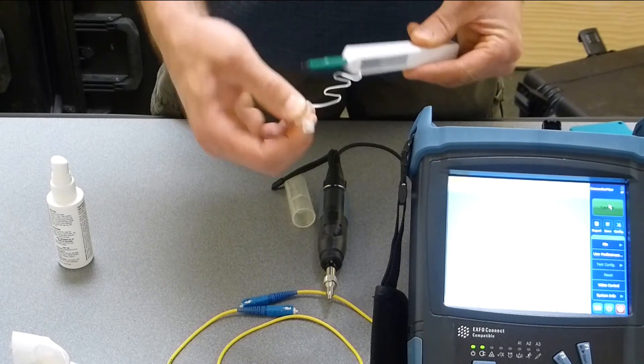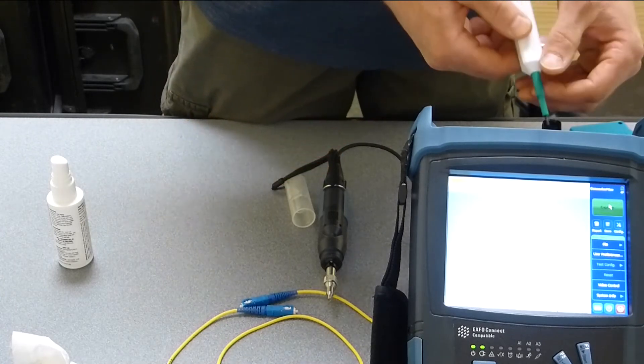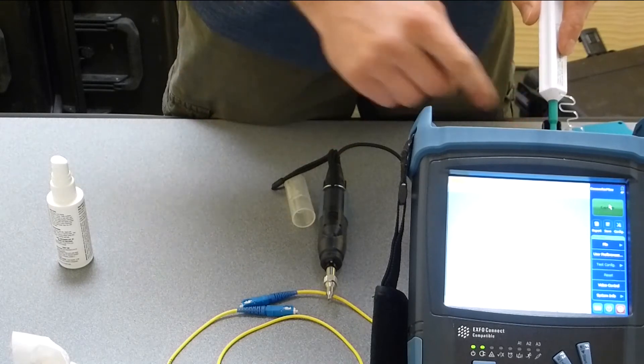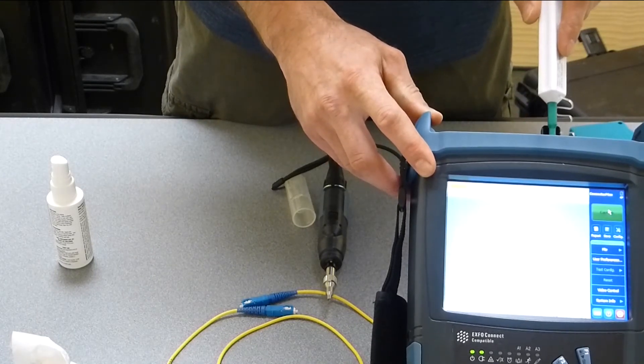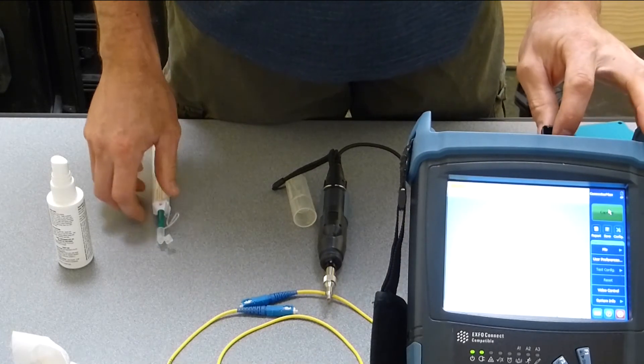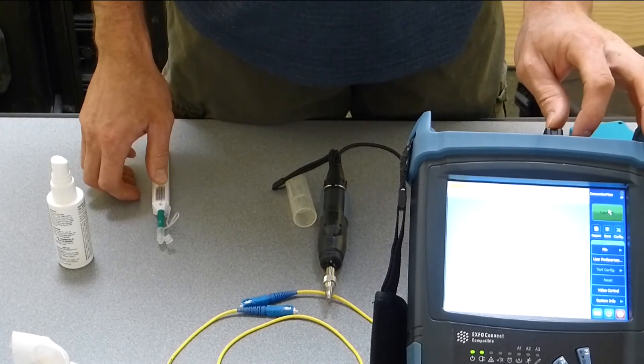But we can also remove this nice little boot and now insert this directly into the interface or the OTDR ferrule port. And we can give it one to two clicks and that will clean the adapter or ferrule inside of this OTDR.